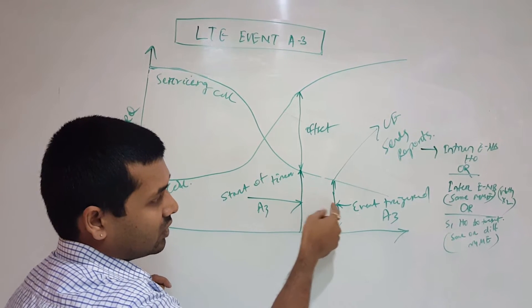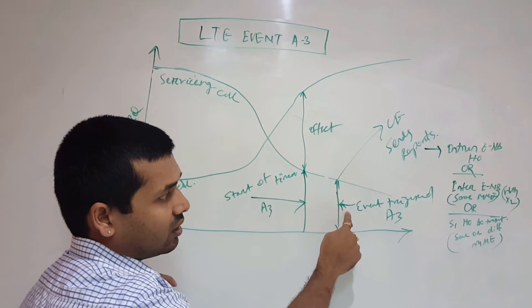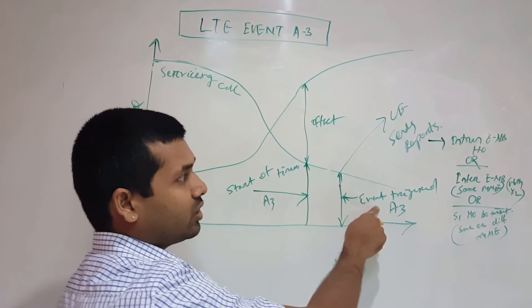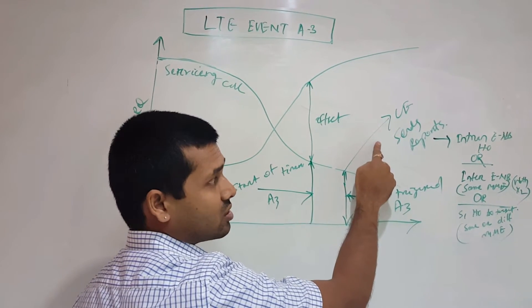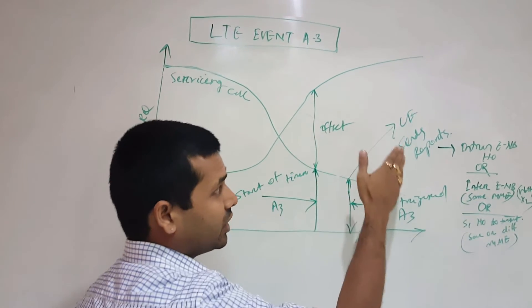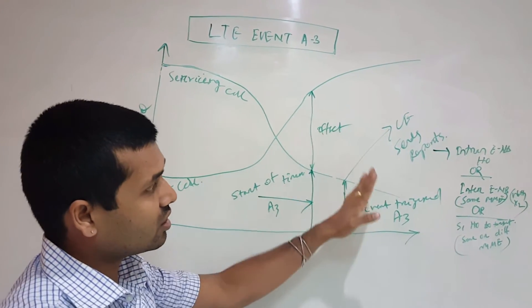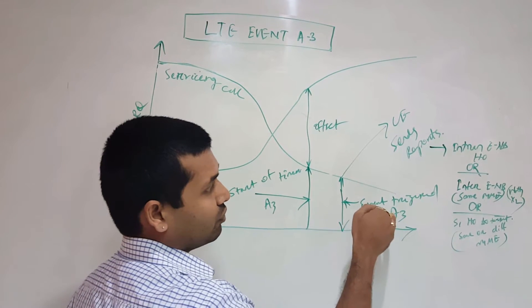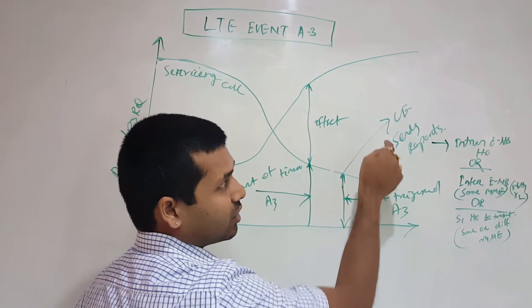If this condition exists for the required amount of time, the event is completed here. A3 is triggered and the UE reports the A3 event to the eNodeB for handover. Once this condition is met, we trigger the A3 event and report to the eNodeB.